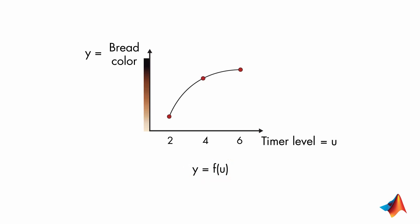But now you want to do the opposite. Given the desired value of y, you want to calculate the value of u. In mathematical terms, this corresponds to taking the inverse of the function. Therefore, to calculate the time you need for your desired bread color, you take the inverse of it.